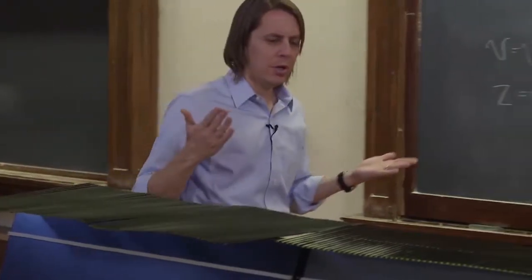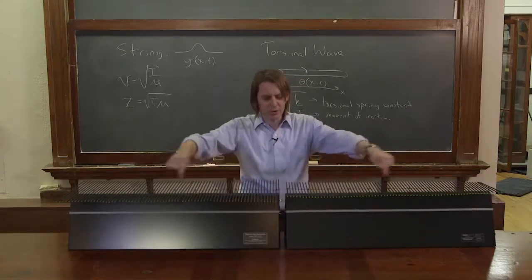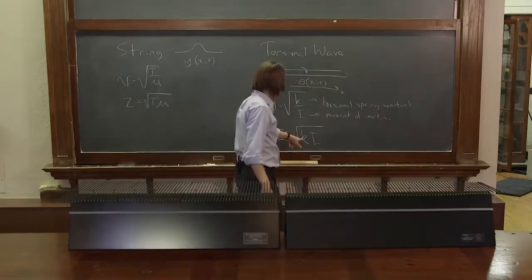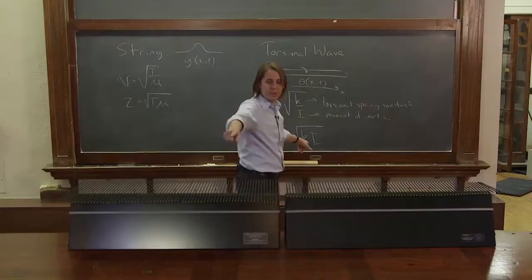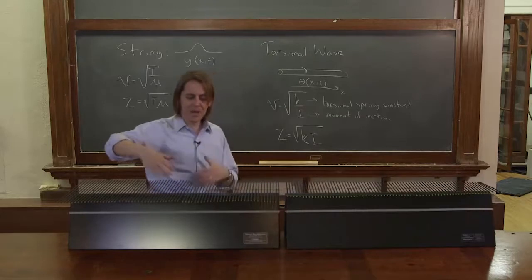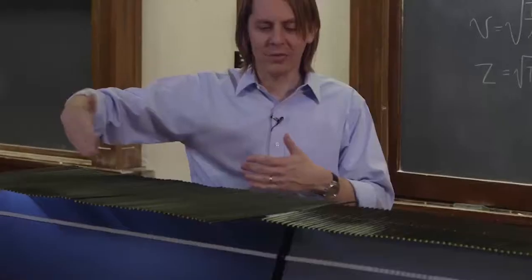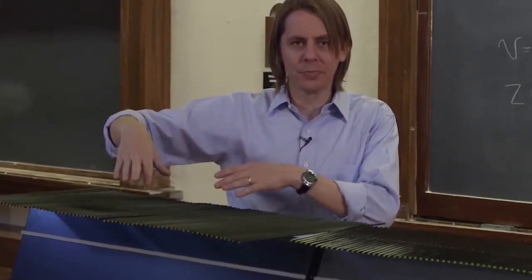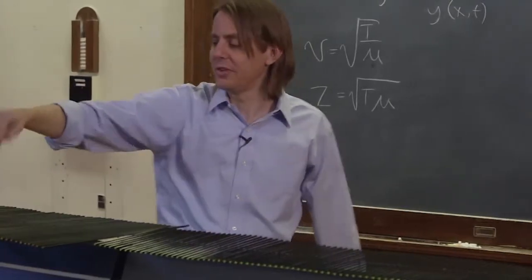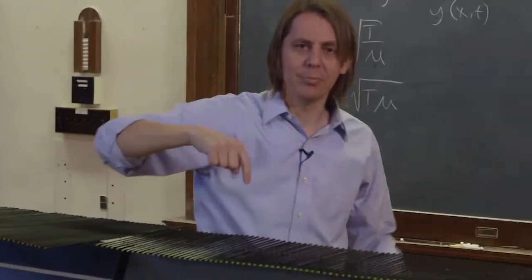So we can start to think about these two wave media here. And they both have the same wire going down the middle, right? So they both have the same k. But clearly this one has bigger rods than that one. And a moment of inertia is usually a sort of mass times length squared. So these are longer, they have more mass, they're bigger, they have a bigger moment of inertia. So this is the big I and this is the little I. So this is the high impedance medium and this is the low impedance medium.